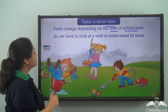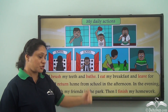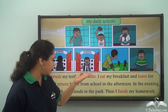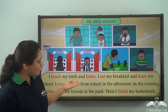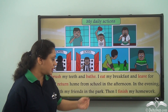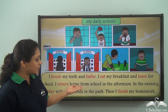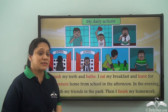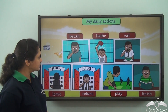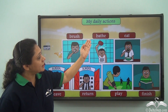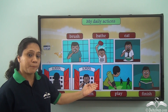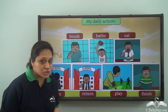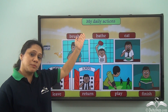My daily actions: I brush my teeth and bathe. I eat my breakfast and leave for school. I return home from school in the afternoon. In the evening I play with my friends in the park. Then I finish my homework. So what are the words that tell us about my daily actions? Brush, eat, leave, return, play, finish.